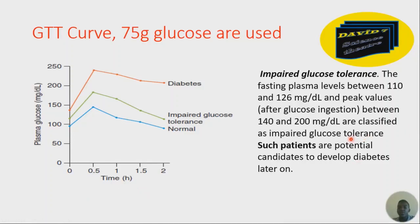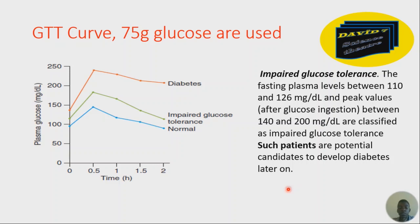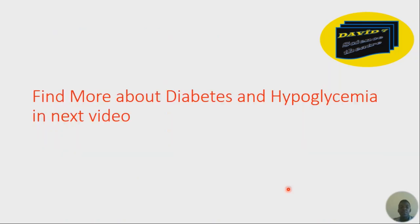Impaired glucose tolerance means a person has fasting values between 110 and 126 mg/dL, and after glucose injection, values peak somewhere between 140 and 200 mg/dL. Such a person is a potential candidate to develop diabetes later on, so it is better to start taking relevant measures to reduce the occurrence and progression of diabetes.